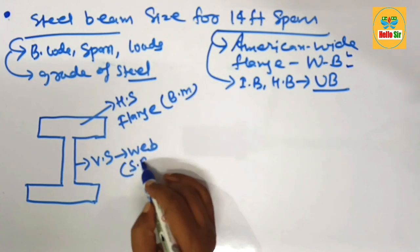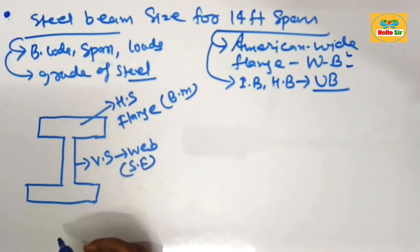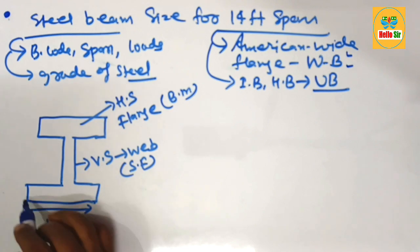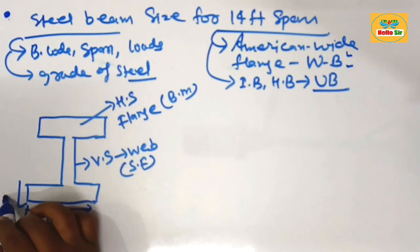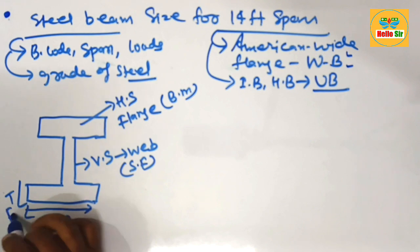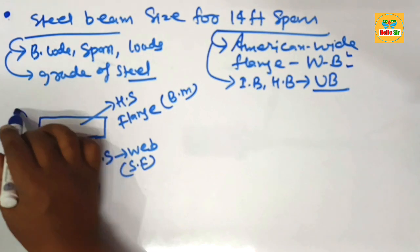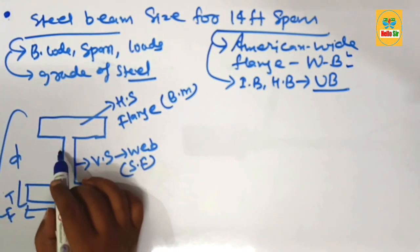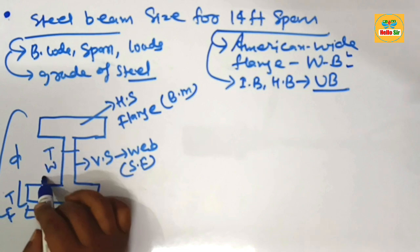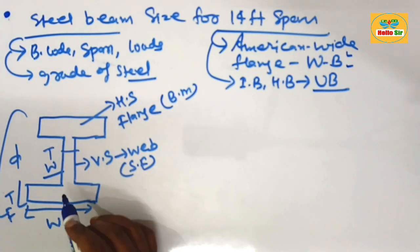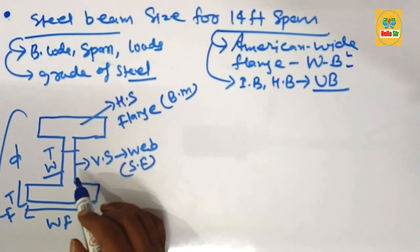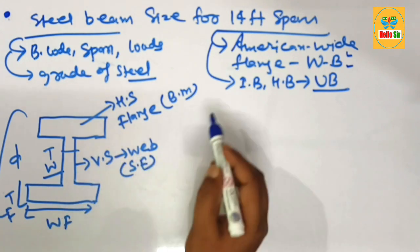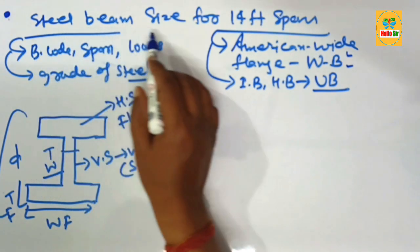This is the width of the flange, and that is the thickness of the flange. This is the depth section of the beam, and this is the thickness of the web. These are the major parts of the American Wide Flange beam.